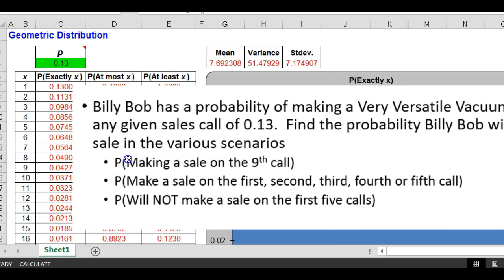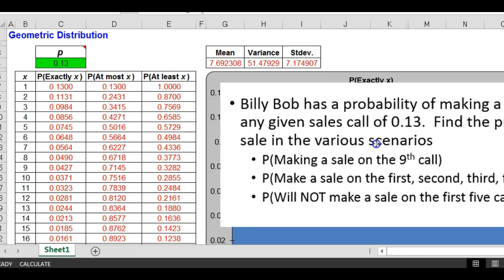What about the probability that it will be on the first, second, third, fourth, or fifth call? Anywhere from 1 to 5. So that is the probability of 1 plus 2 plus 3 plus 4 plus 5. If I add all those together, the probability that it would take at most five calls would be .5016.